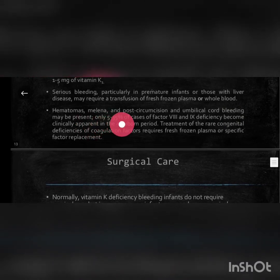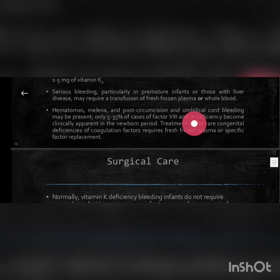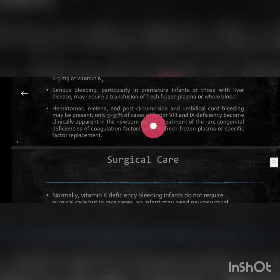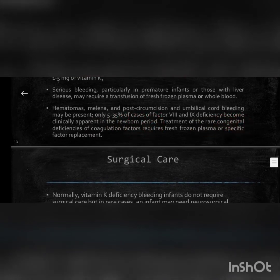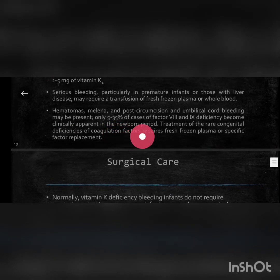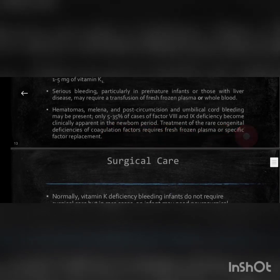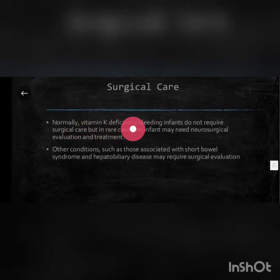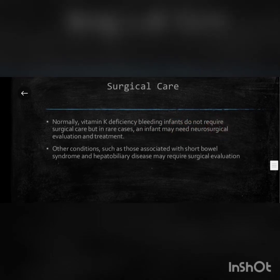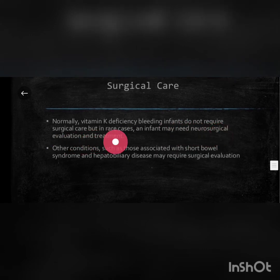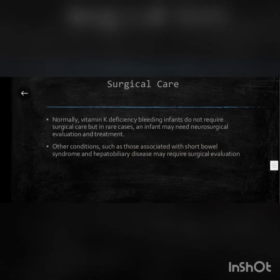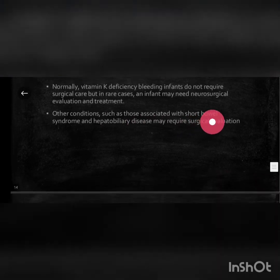Hematomas, melena, and post-circumcision and umbilical cord bleeding may be present. Only 5 to 35% of cases of factor VIII and IX deficiency become clinically apparent in the newborn period. Treatment of rare congenital deficiencies of coagulation factors requires fresh frozen plasma or specific factor replacement. Regarding surgical care: normally vitamin K deficiency bleeding infants do not require surgical care, but in rare cases an infant may need neurosurgical evaluation and treatment. Conditions such as short bowel syndrome and hepatobiliary disease may require surgical evaluation.